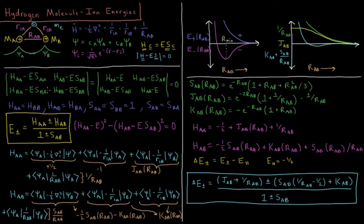These functions are not orthogonal, so S_BA and S_AB do not equal zero, but they do equal each other. Similarly, H_AB equals H_BA because our Hamiltonian is a Hermitian operator. Applying these symmetries, our determinant becomes: (H_AA minus E), (H_AB minus E·S_AB), (H_AB minus E·S_AB), (H_AA minus E) — because the two nuclei are equivalent, so the Hamiltonian matrix element for each interacting with itself is the same.